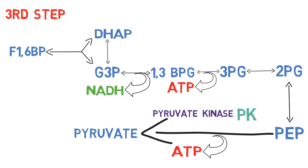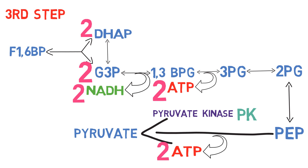Fructose-1,6-bisphosphate contains 6 carbon atoms, but both DHAP and G3P contain only 3 carbon atoms each. So one fructose-1,6-bisphosphate converts into 2 DHAP or 2 G3P. From one fructose-1,6-bisphosphate we get 2 NADH, 2 ATP plus another 2 ATP for a total of 4 ATP, and 2 pyruvate. But since the cell utilized 2 ATP in the first and second main steps, the net amount of ATP is 2. That concludes glycolysis.